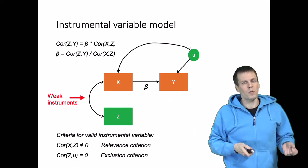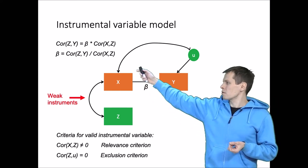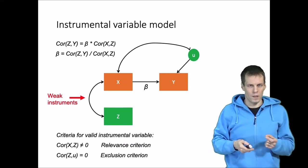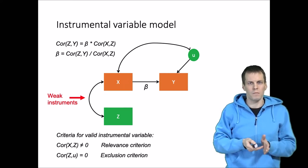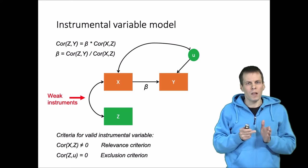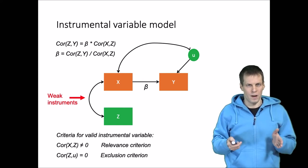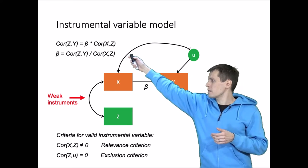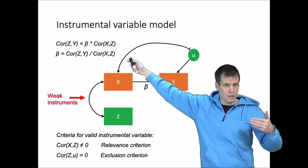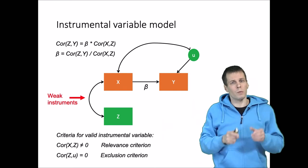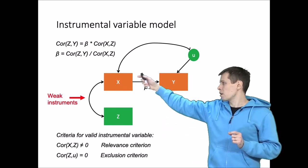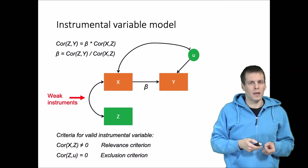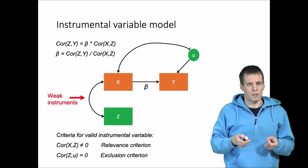So why would it be a problem if this correlation is very small? It's a problem because then the sampling variation of that correlation will be relatively large compared to the population value. And when the magnitude of this correlation is small but its variance is high, we can see that when we divide the first correlation by the second one we will get widely different results. So we will get very inefficient results.